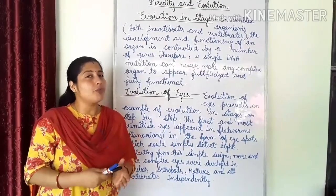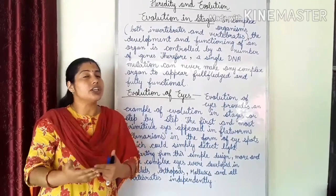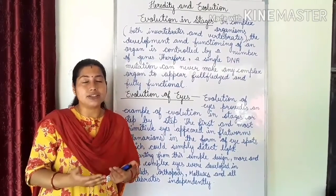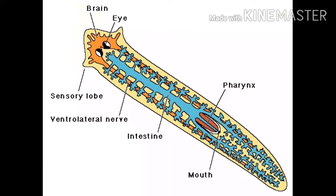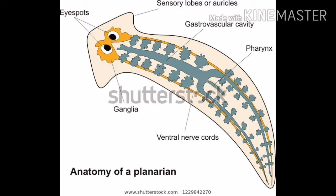Any organ becomes properly formed and fully functional only when changes happen generation to generation, through mutations in organisms. So let's take the example of evolution of eyes. Any complex body organ cannot be generated by a single gene mutation — they are created by nature bit by bit over many generations. Evolution of eyes provides an example of evolution in stages, step by step.